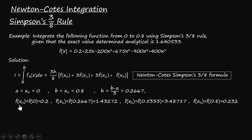So we will calculate the function value at these points x_0, x_1, x_2, and x_3. That turns to be f(x_0) equals to 0.2, f(x_1) equals to 1.43272, f(x_2) equals to 3.48717, f(x_3) equals to 0.232. So we will substitute these values of function and the corresponding h value into this formula, and when we compute it, the final value is 1.51917.